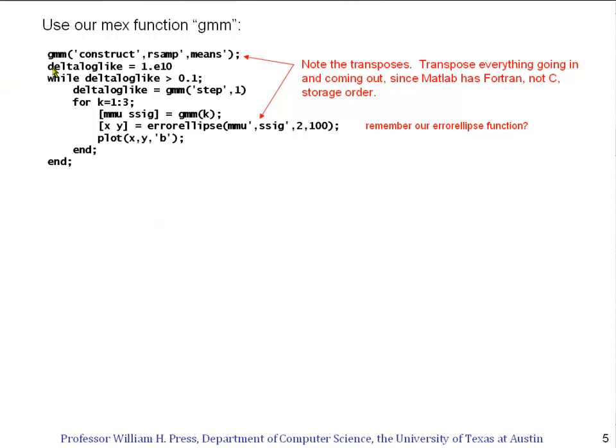Here's what it looks like using our MEX function. We construct the GMM and now we loop looking for a step in the log likelihood which is less than 0.1. When this is less than 0.1, we'll decide in this simple example that's converged enough for us. Probably in real life you want a smaller number like 0.01 or 0.001. I'm going to take a step only once each time, one step each call, just so that I can plot the error ellipses of the various components—the way of visualizing what the Gaussian is. Do you remember our error ellipse function? We developed that in a very early segment in the series and now we're going to use it.